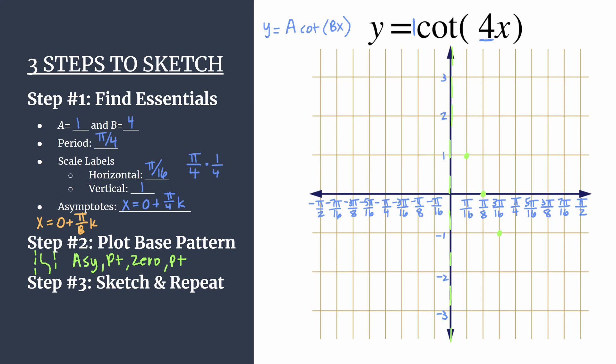Let's move on to step 3. Let's sketch this in. So our curve looks just like this. And we have one cycle of y equals cotangent 4x.